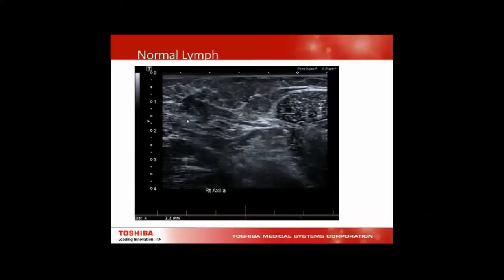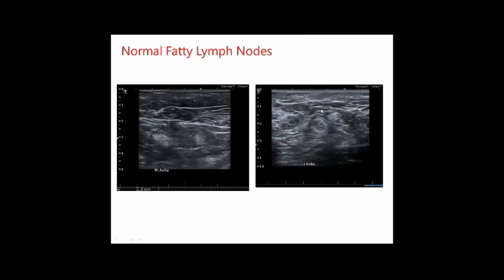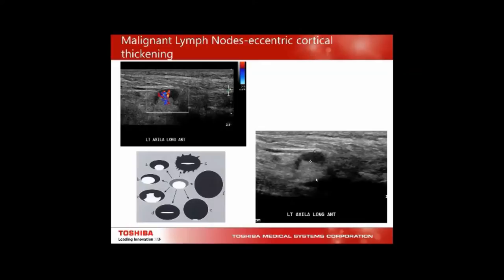A normal lymph node sits below the fascia, deep to the superficial fascia — make sure you're looking deep enough. Rounded nodes with a central echogenic fatty hilum are benign. A malignant node shows eccentric cortical thickening, and with colour, messy disorganized vascular branching extending to the periphery — this is where SMI is very handy.